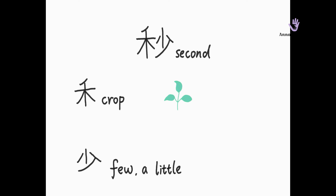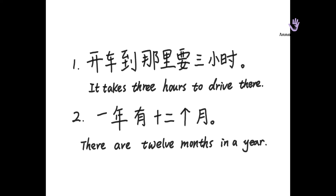Now let's look at some examples. The first: 'It takes three hours to drive there' — 开车到那里要三小时. The second: 'There are twelve months in a year.' There are some number words in those two sentences — if you want to review them, you can check our previous video.